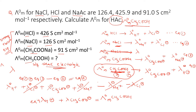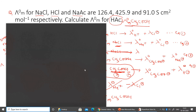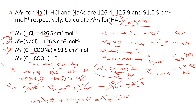Now substituting the values: equation 1 = 426, equation 3 = 91, equation 2 = 126. So: 426 + 91 = 517, and 517 − 126 = 391. Therefore, the limiting molar conductance of acetic acid is 391. In this way we can calculate the limiting molar conductance of a weak electrolyte using Kohlrausch's law.